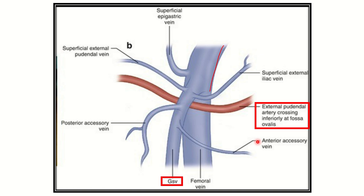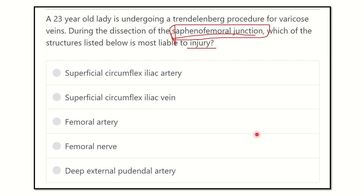This is the question here. A 23-year-old lady is undergoing a trendelenburg procedure for varicose veins. During the dissection of the saphenofemoral junction, which of the following structures listed below is most liable to injury?